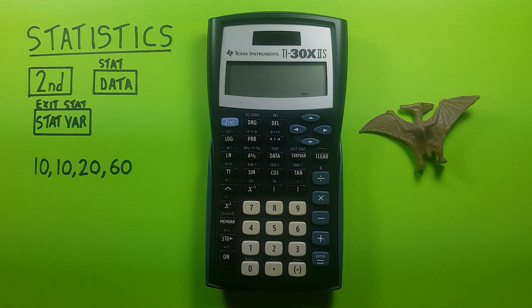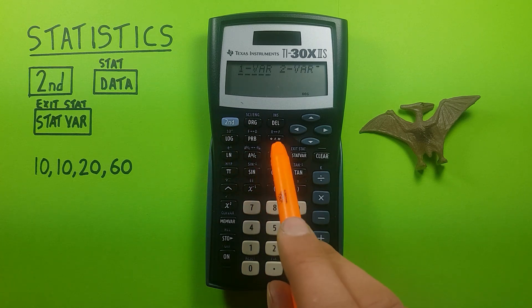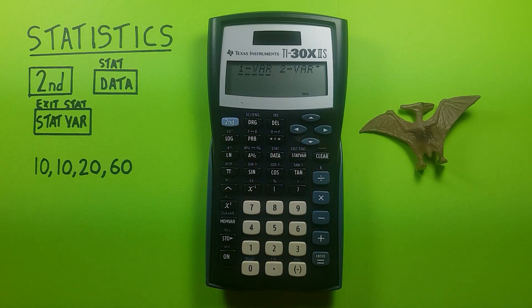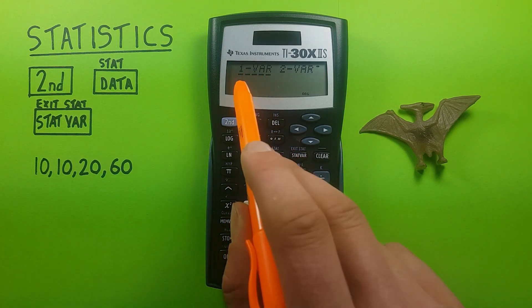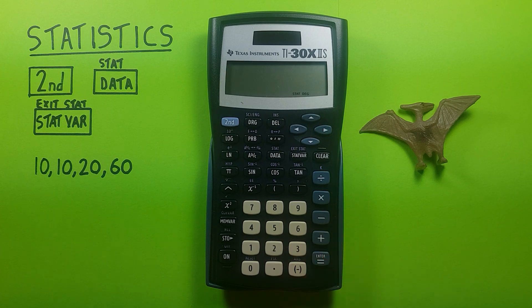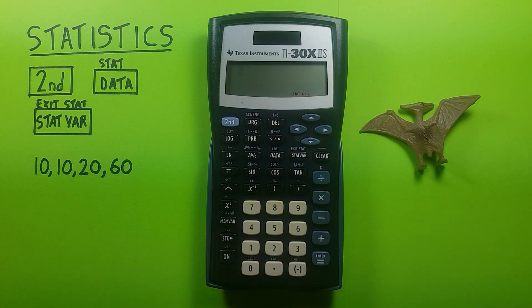To get started we need to change our calculator into statistics mode. To do this we use the second function data key, it'll bring up this screen, and since for this example we'll be using one variable statistics, we'll select one var, enter. You can see at the bottom of the screen it says stat. This means we're in statistics mode in the calculator.